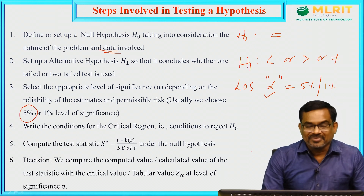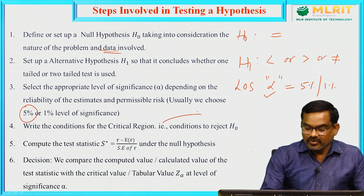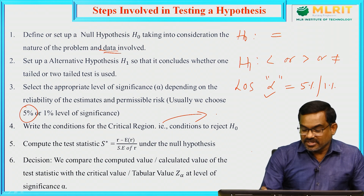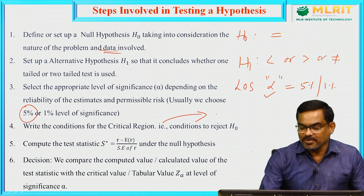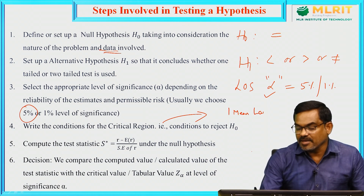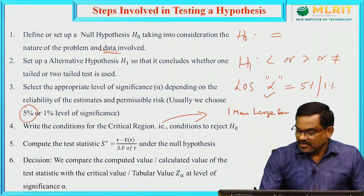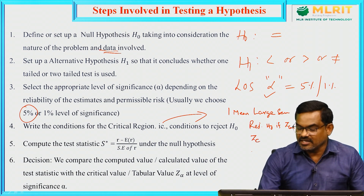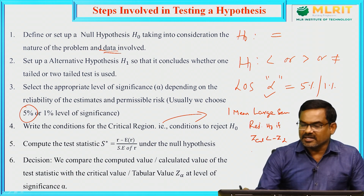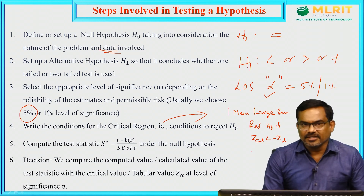Coming to step 4, the critical region — here we write the conditions to reject the null hypothesis, specifying when to reject and when to accept. For example, in a one mean large sample less-than-type problem, reject H naught if z calculated is less than minus z alpha. In a greater-than type, there will be another condition. So in step 4, we identify the critical region based on these conditions.